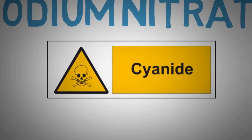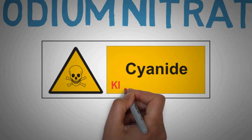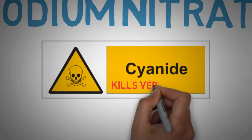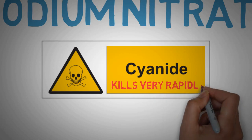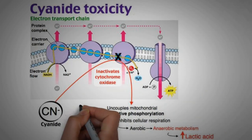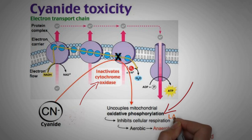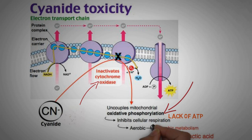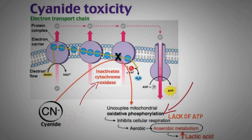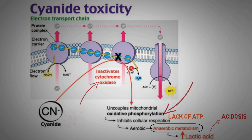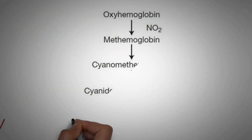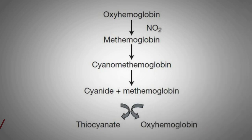Cyanide is known to be one of the most dangerous poisons of all time due to its ability to kill very rapidly. Sodium nitrate is the drug of choice in the case of cyanide toxicity. Cyanide binds and inhibits cytochrome a3, preventing oxidative phosphorylation from occurring, leading to a lack of ATP. As a compensatory mechanism, the cell resorts to anaerobic respiration, leading to an increase in lactic acid and subsequent acidosis.